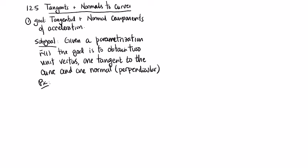Visually, this is what we're looking for — a two-dimensional picture, though you can picture this in three dimensions as well. You've got a curve with a parametrization, a specific point, and the goal is to obtain two vectors. One will be a unit vector tangent to the curve — let's say the curve is going this way — and the other will be a normal vector, perpendicular, so pointing this way.